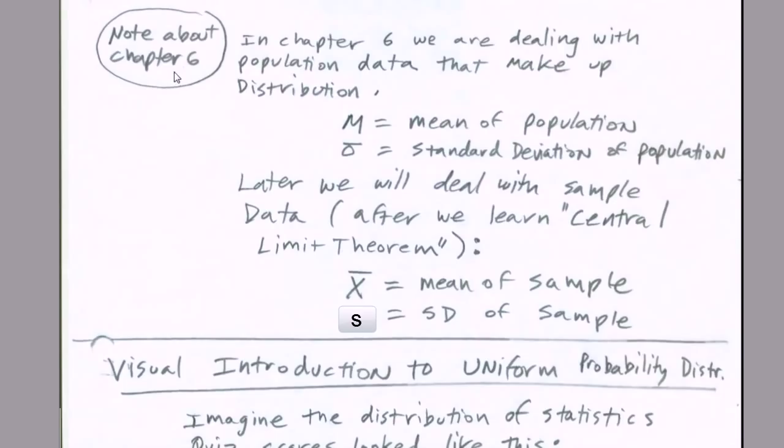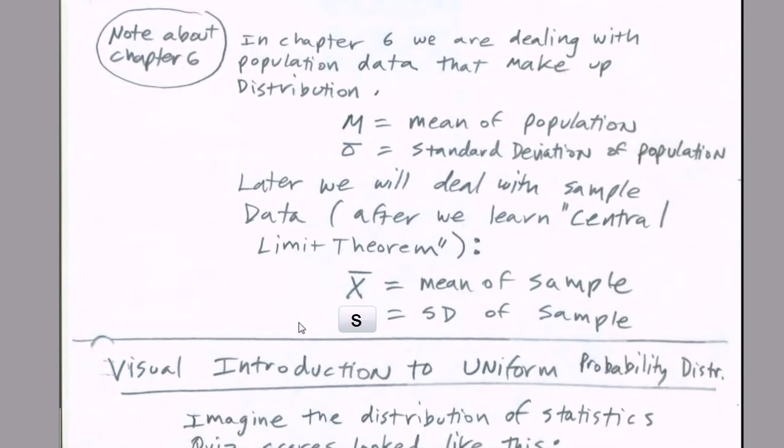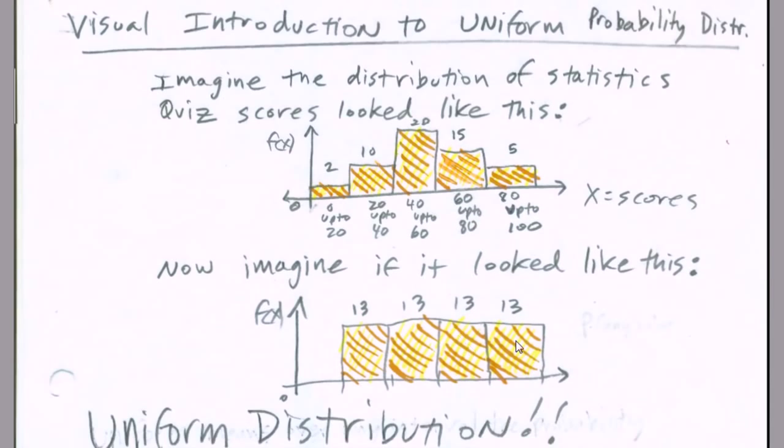Now, an important note about chapter 6. In chapter 6, we'll be dealing with population data that make up the distribution. So mu and sigma, mean of the population, standard deviation of the population. Later, after we learn the central limit theorem, then we'll talk about x bar, that's the mean of the sample, and s, that's the standard deviation of the sample. All right, next video, we're going to start by talking about the uniform distribution, and then we'll move on to the normal and exponential. All right, see you next video.